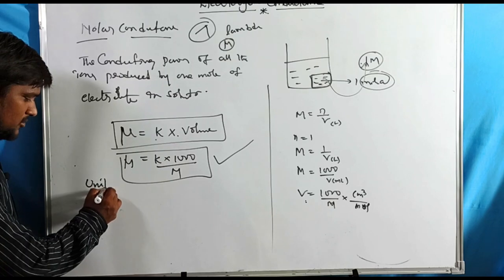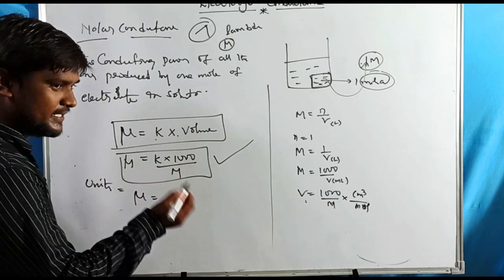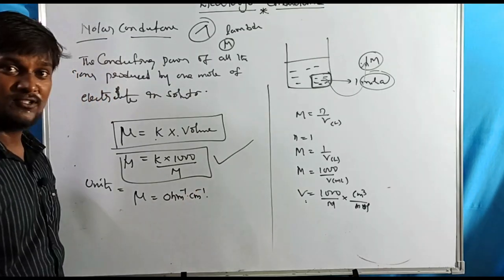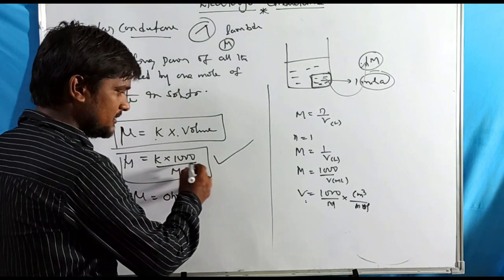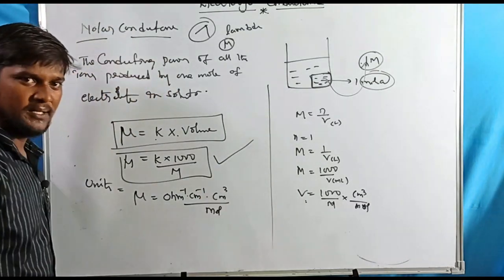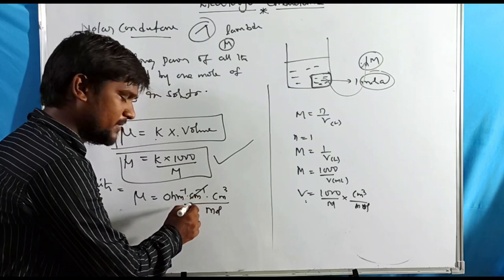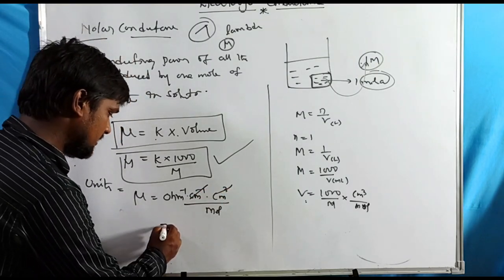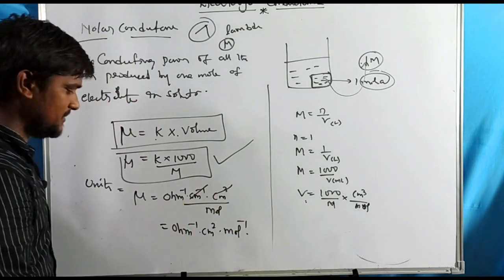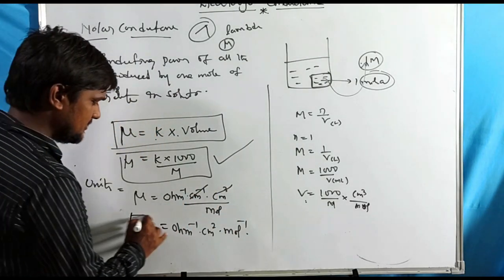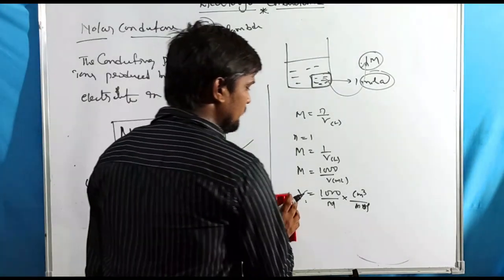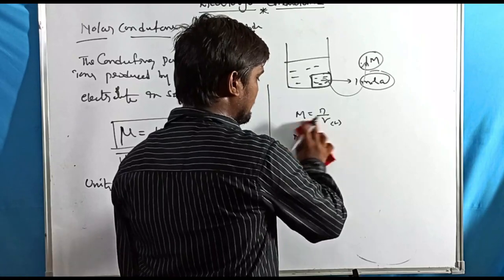Units of molar conductance: κ has units ohm⁻¹·cm⁻¹, and volume/molarity gives cm³·mol⁻¹. Multiplying: ohm⁻¹·cm⁻¹ × cm³·mol⁻¹ = ohm⁻¹·cm²·mol⁻¹. So the units of molar conductance are ohm⁻¹·cm²·mol⁻¹. Similarly, we can find equivalent conductance.